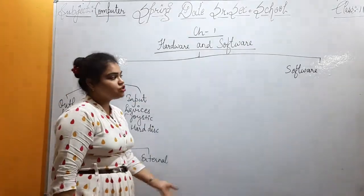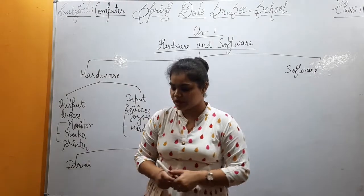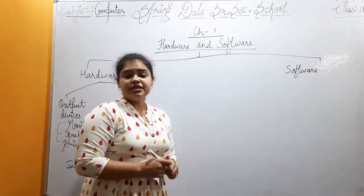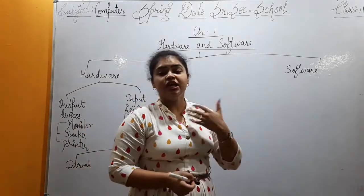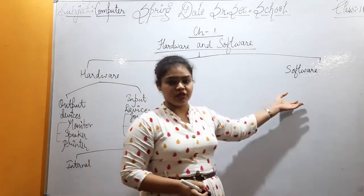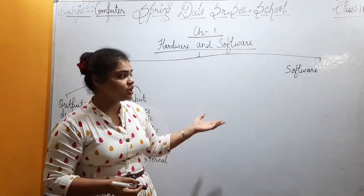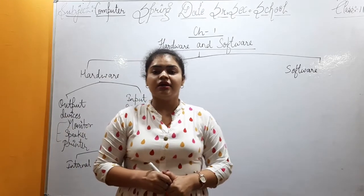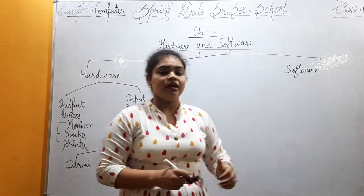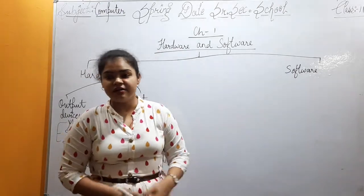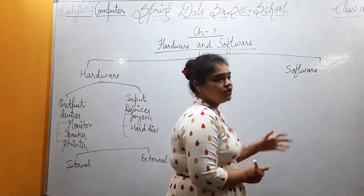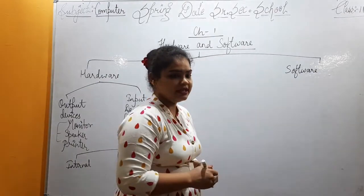Coming to the next topic — software. What is software? Software is what we give instructions to. Whatever instructions we give to the software, the result is shown on the computer through the software. In other words, software is the brain of the computer.